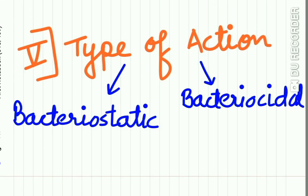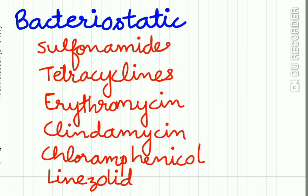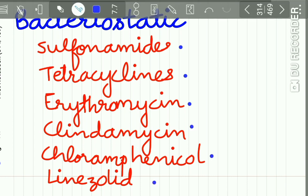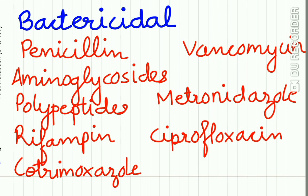The fifth system of classification depends on the type of action — whether bacteriostatic or bactericidal. Primarily bacteriostatic antimicrobial agents include sulfonamides, tetracycline, erythromycin, clindamycin, chloramphenicol, and linezolid. Bactericidal drugs include penicillin, aminoglycosides, polypeptides, rifampicin, co-trimoxazole, vancomycin, metronidazole, and ciprofloxacin.